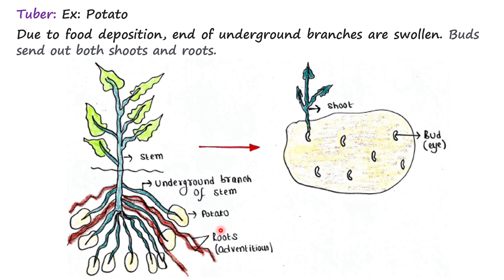The ends of these side branches get swollen due to the deposition of food, which are known as potatoes. Plants store food this way to survive when food is not available. If you look at a potato, you may find these eyes, which are nothing but buds, and new shoots and roots can be generated from these buds. If you plant this plantlet into the soil, it will grow into a mature plant.